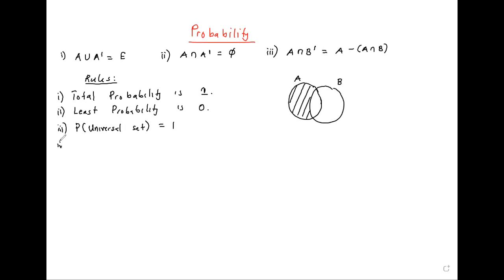So the probability of an empty set is equal to zero. From this, we get that the probability of A union A complement is then going to be one.